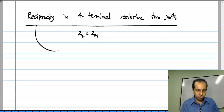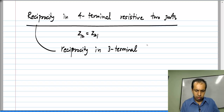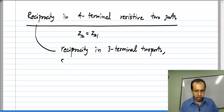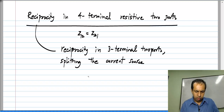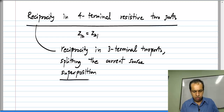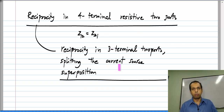In doing that, we used reciprocity in three-terminal resistive two-ports, the earlier theorem on splitting the current source, and superposition. Because we were using reciprocity in three-terminal two-ports, we had to define some other ports with a single common node as the reference node, and we were able to do that quite easily. Hope that is clear.